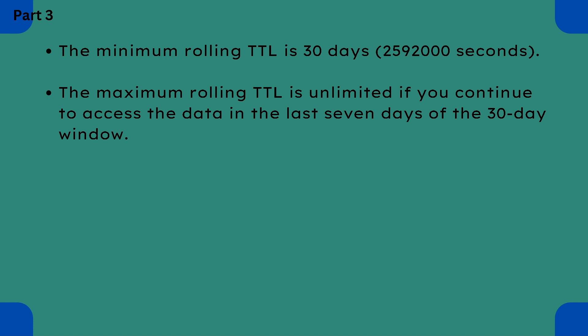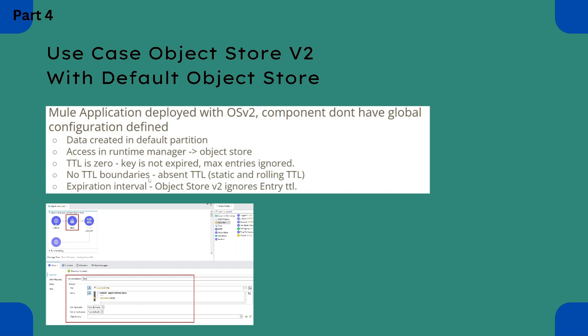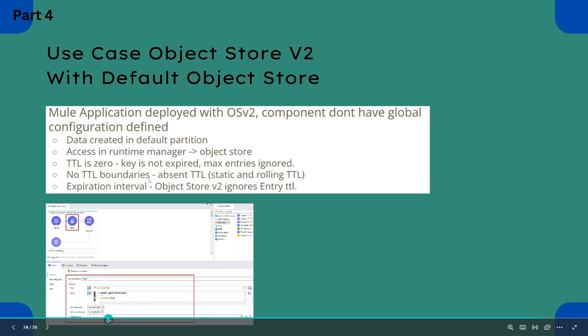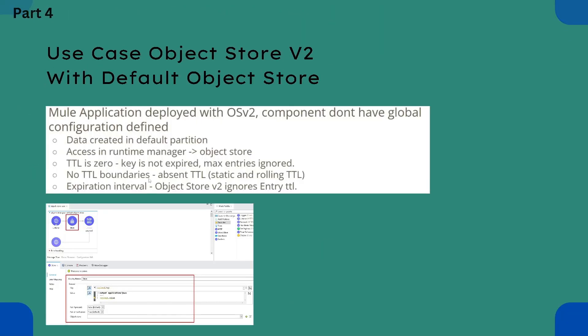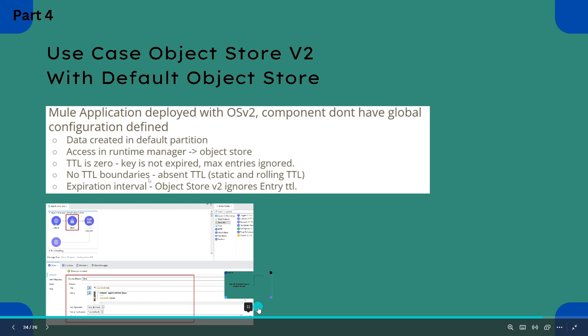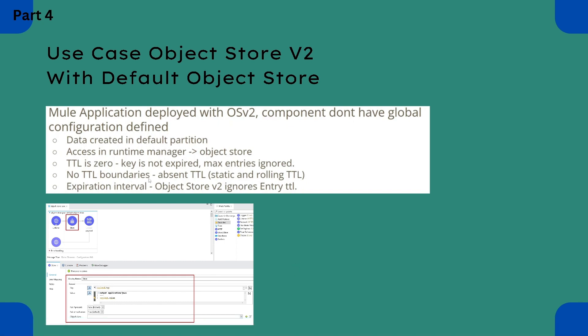We will not supply any TTL value, so rolling TTL will be applied. Let's go to Anypoint Studio and do some default object store configurations. You can see how the default object store looks — there is no object store configuration visible here. When no custom object store configuration is defined, the components using the object store are considered to be using the default object store.